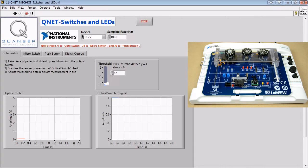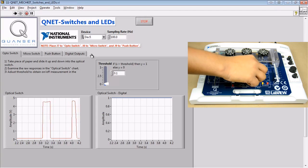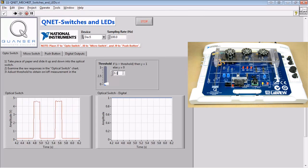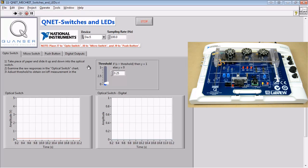Using the optical switch, we'll observe the response to sliding a piece of paper up and down into the optical switch. We'll investigate an appropriate threshold value to use to generate a digital signal from the optical switch.